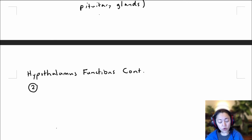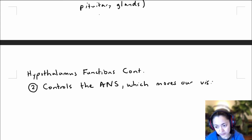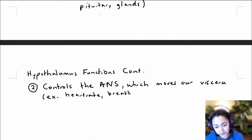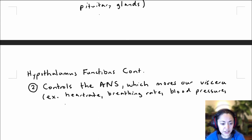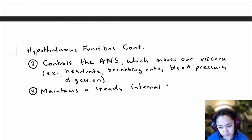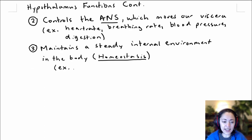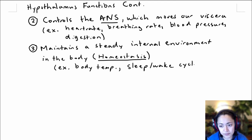The hypothalamus also has control over the autonomic nervous system, which is the division of our nervous system that moves our viscera or internal organs — for example, controlling our heart rate, breathing rate, blood pressure, and digestion. The third major function of the hypothalamus is maintaining a steady internal environment in the body, which we call homeostasis. Examples of what is maintained at homeostasis by the hypothalamus include body temperature, sleep-wake cycles, and food and water intake.